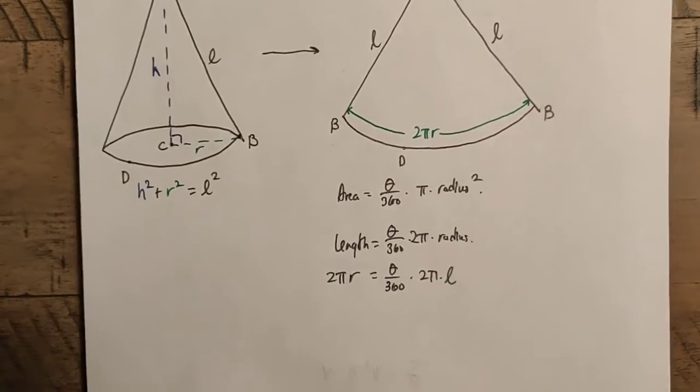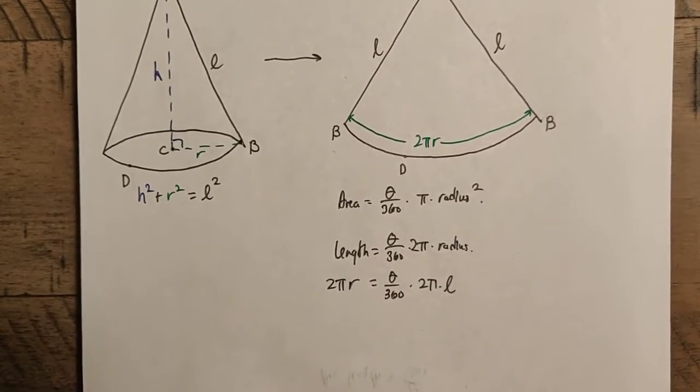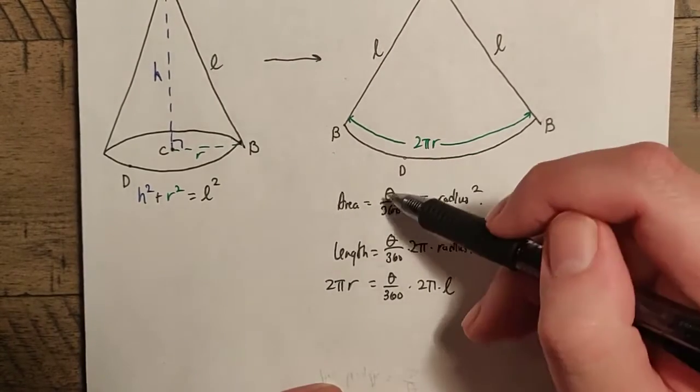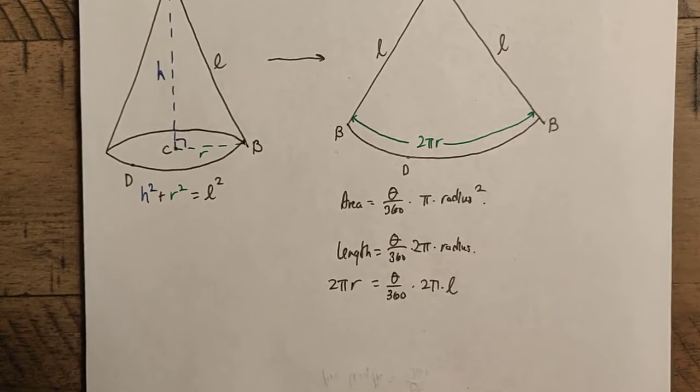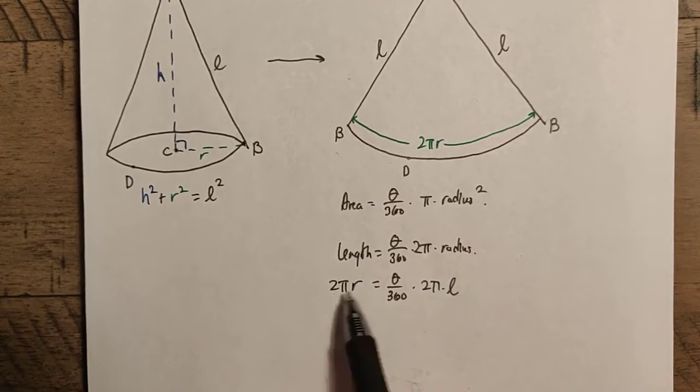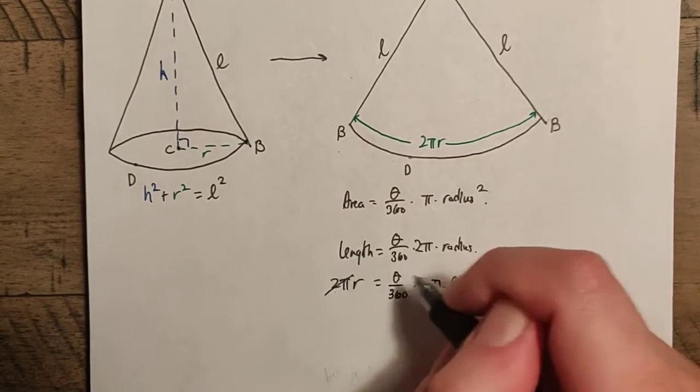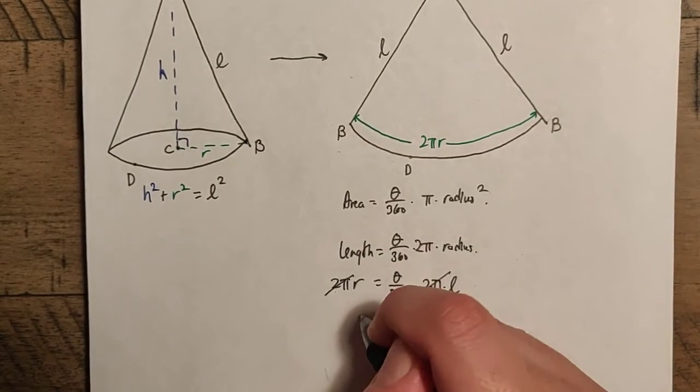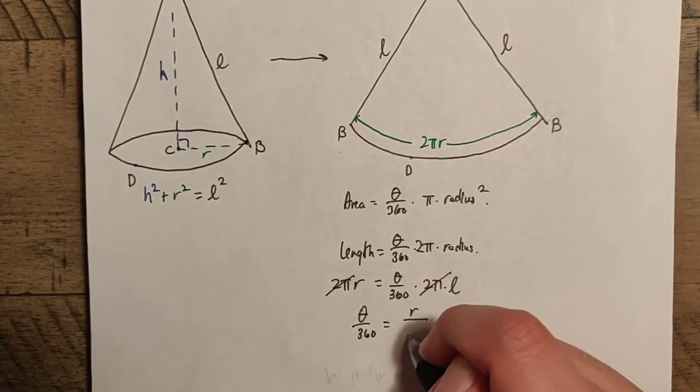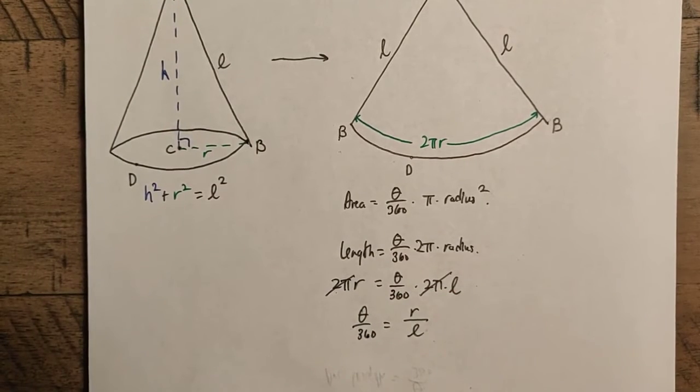So, now I have this equation here, that 2 pi r is equal to theta over 360 times 2 pi L. Now, technically, I don't know what theta is, but since theta over 360 shows up in the area here, I don't have to solve for theta. I just have to solve for theta over 360. And another nice thing to note here is that the 2 pi's just cancel out because you divide by 2 pi. And then you get that theta over 360 is just R over L, because we just divide both sides by L.